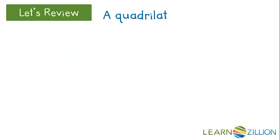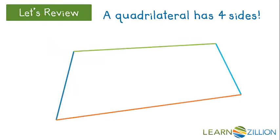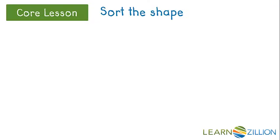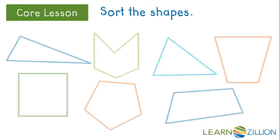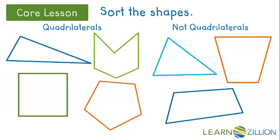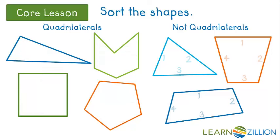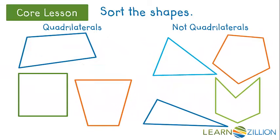Let's review. We already know that a quadrilateral has four sides. Let's sort these shapes into two categories: shapes that are quadrilaterals and shapes that are not quadrilaterals. The shapes on the left have four sides and can stay. The shapes on the right that have four sides need to move to the left. All the shapes on the left are quadrilaterals; all the shapes on the right are not.